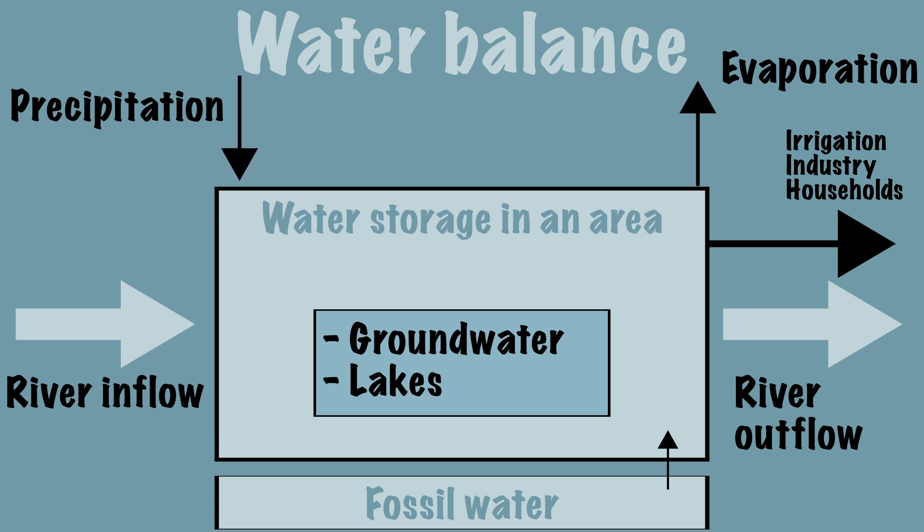In short, the water balance shows the ratio between the supply and discharge of water in an area, and indicates when water use is not sustainable.